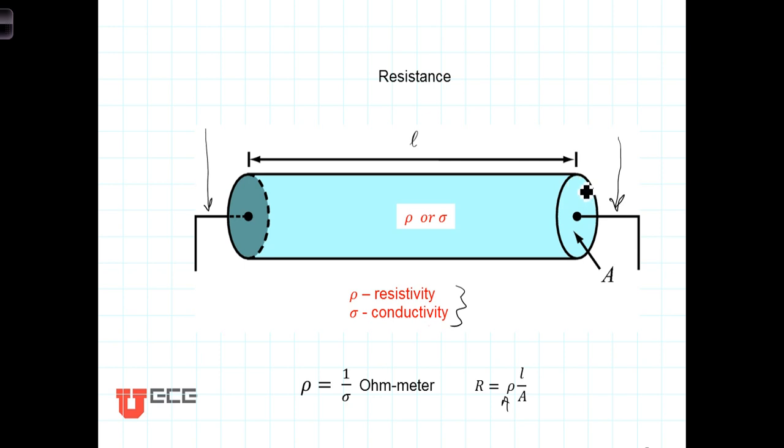On the other hand, the larger the cross-sectional area of the device, the less resistance they will experience. Or to put it another way, the greater the opening, the more electrons are able to flow through.